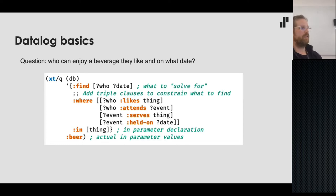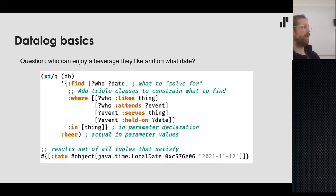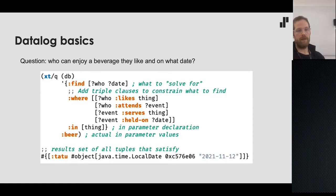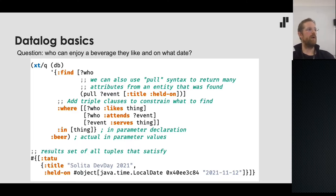We can give the query input parameters: we define `thing` in the input list and pass it the actual value 'beer.' The query is then ready to execute on the database and returns a set of tuples satisfying all conditions — in this case, Tatu paired with the local date of last Friday. We can also use pull syntax: instead of just binding a logic variable like `?event`, we use pull to specify which attributes of that entity we want to retrieve.